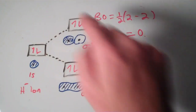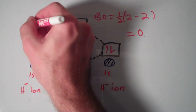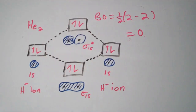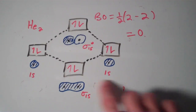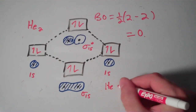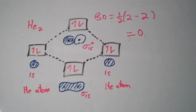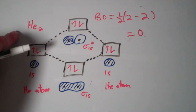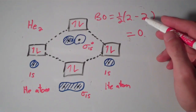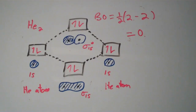What about He2? A helium atom has two electrons, and we're talking about linear combinations of 1s orbitals — that combination is the same regardless of which element you have. It turns out the bond order for He2 is the same as for the H2 2 minus ion, which is zero. So we wouldn't expect diatomic helium to exist in nature, and indeed it doesn't.